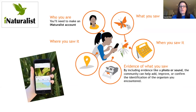Now we have smartphones, and the power of data collection we have in our hands every day is totally amazing. A phone takes care of a majority of this data collection: the photo is your evidence, it's geo-referenced so it tells you exactly where you are even if you don't know, it's time and date stamped, and the iNaturalist app will help you identify what you saw even if you aren't sure.